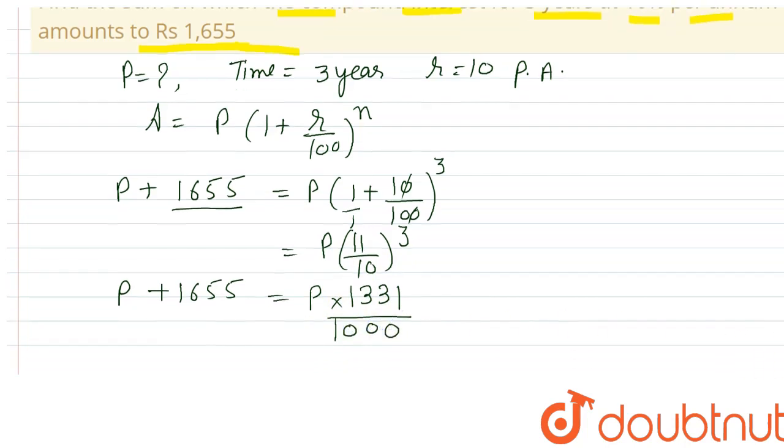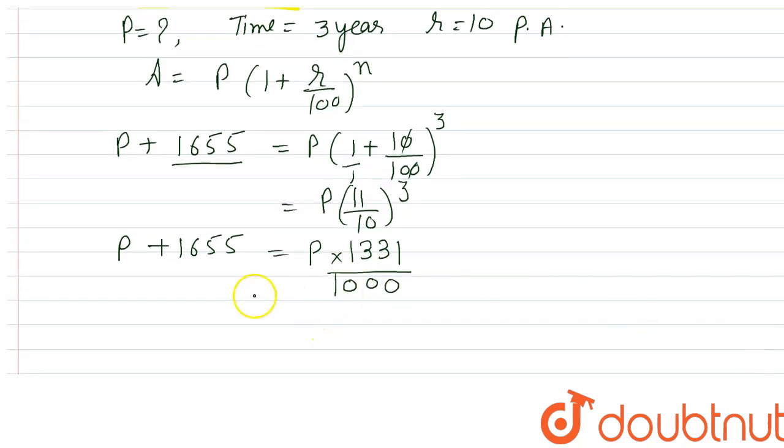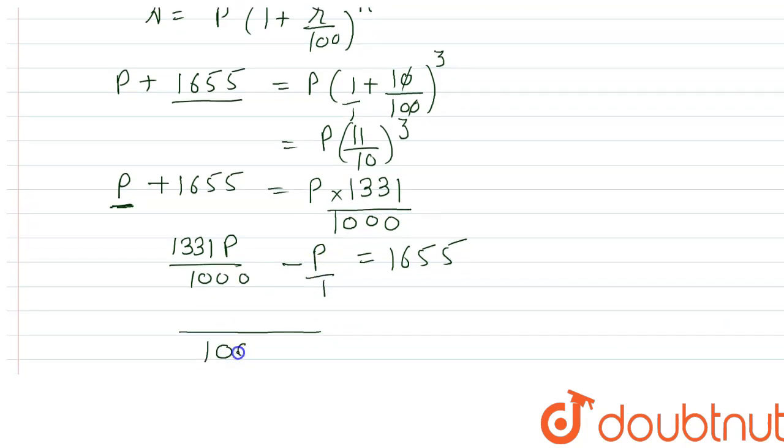Now solve it like a linear equation in one variable, which is P. Collect the terms of P: (1331/1000)P minus P equals 1655. Taking LCM on this side, when we take 1000 as LCM, it will be 1331P minus 1000P.